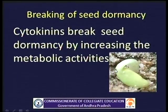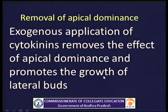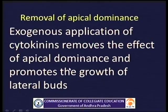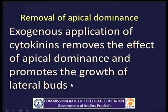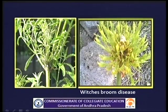Breaking of seed dormancy: Cytokinins break seed dormancy by increasing metabolic activities. Removal of apical dominance: We have seen that auxins induce apical dominance. An interesting aspect of cytokinins is that exogenous application of cytokinins removes the effect of apical dominance and promotes the growth of lateral buds, reversing the auxin effect. By applying cytokinins, lateral branching can be induced.